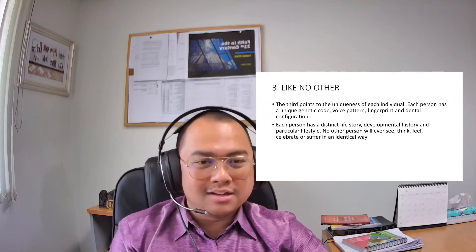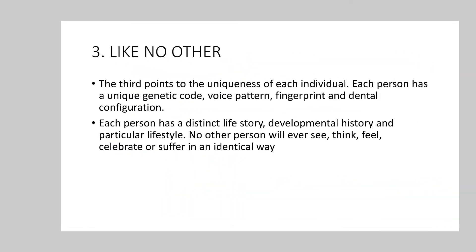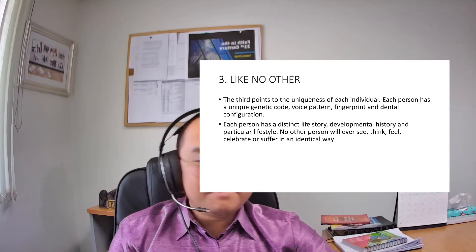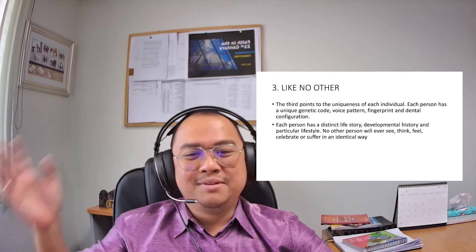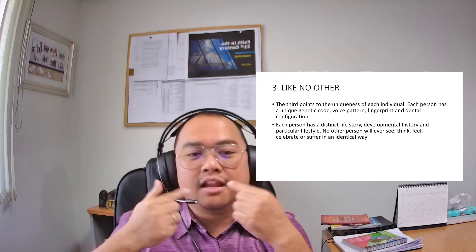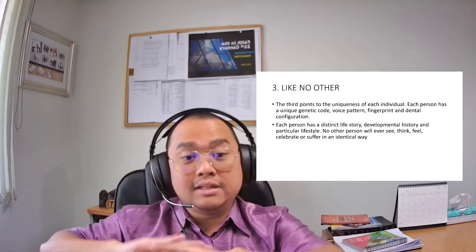And the third one is: we are like no other. The third point refers to the uniqueness of each individual. Each person has a unique genetic code, voice pattern, fingerprint, and dental configuration. Each person has a distinct life story, developmental history, and particular lifestyle. No other person will ever see, think, feel, celebrate, or suffer in an identical way. So everybody is like no other, because everybody is unique individually — their fingerprint, dental configuration, voice, and genetic code are all different.